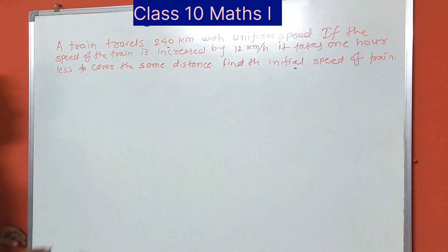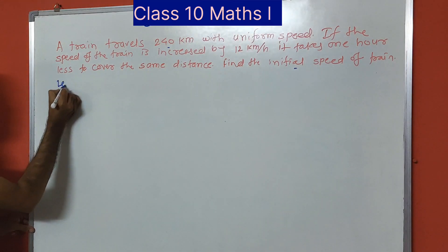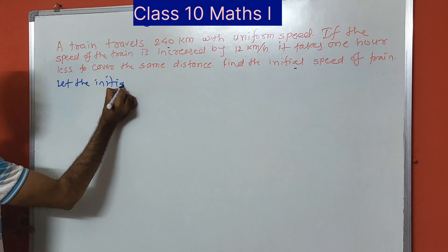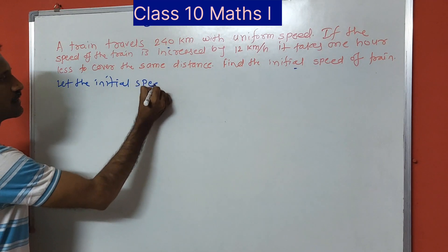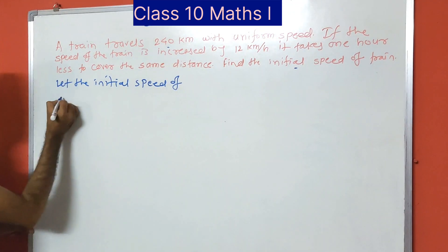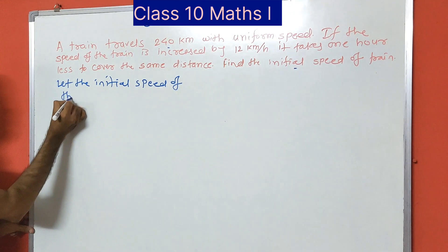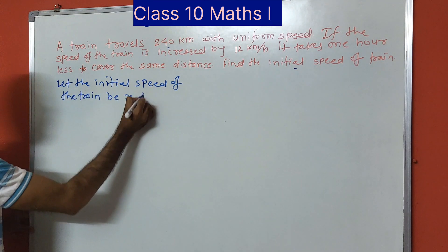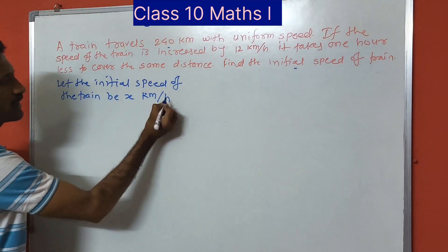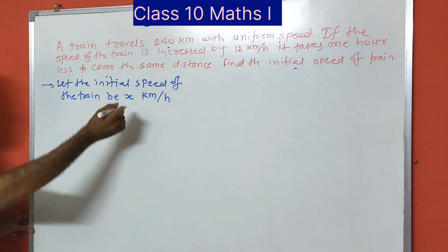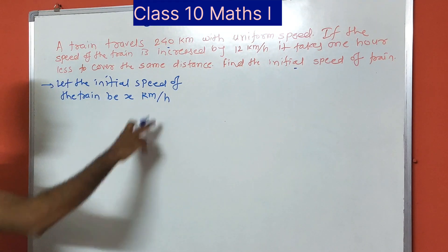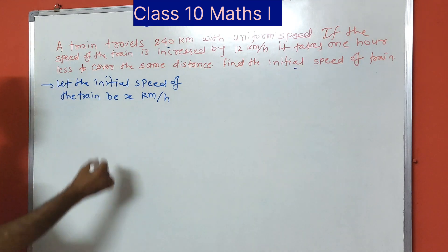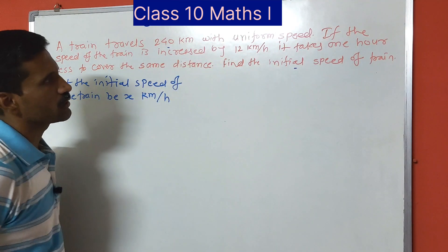We have to find the initial speed of the train. So let the initial speed of the train be x km per hour. We have assumed it to be x km per hour, so if the speed is increased by 12 km per hour the new speed becomes x plus 12.